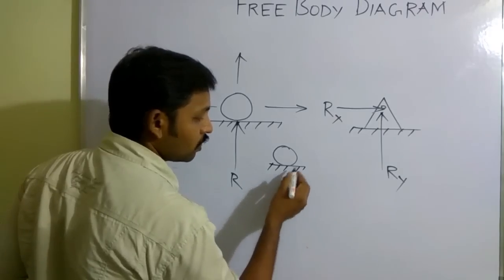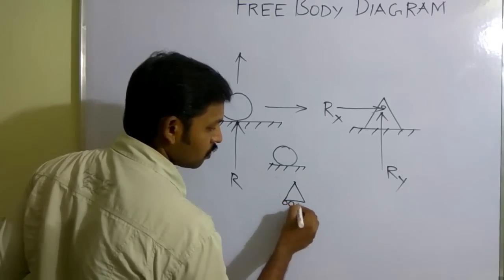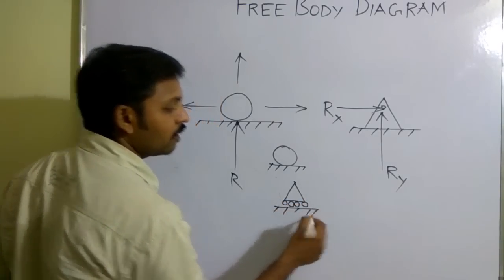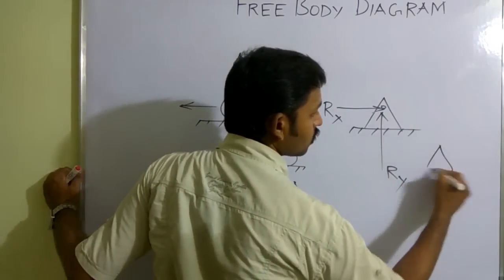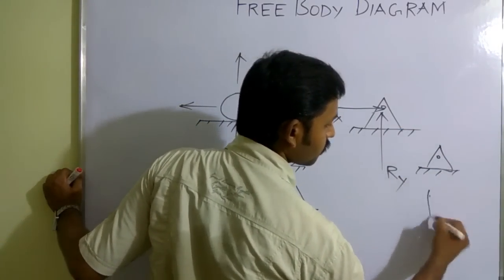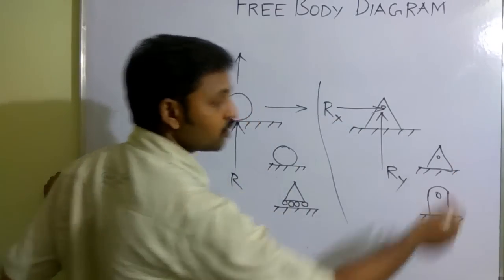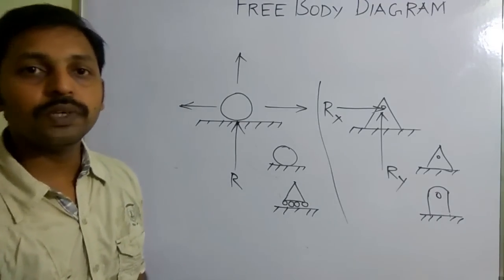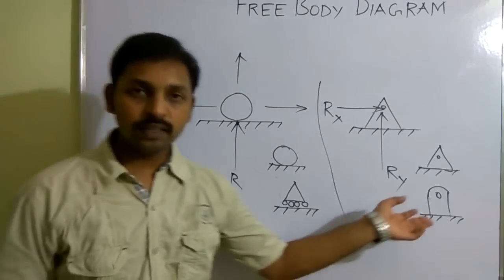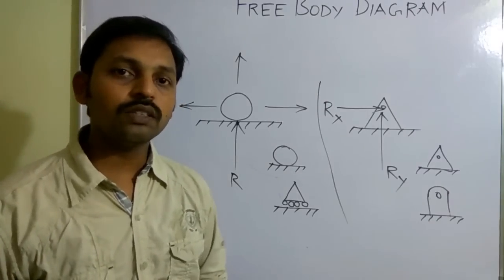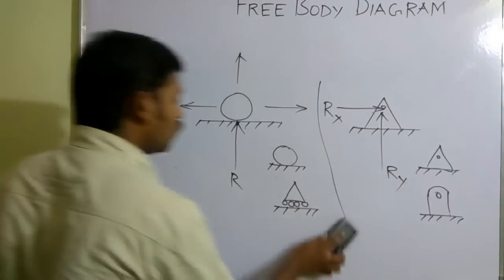For roller support, there are two symbol notations: a triangle shape with rollers beneath it. For hinged support, there are also two symbol notations. When there is a roller support, motion is restricted in one direction only, so you represent one reaction. When there is a hinge support, motion is restricted in two directions, so you represent reactions along both x and y directions.